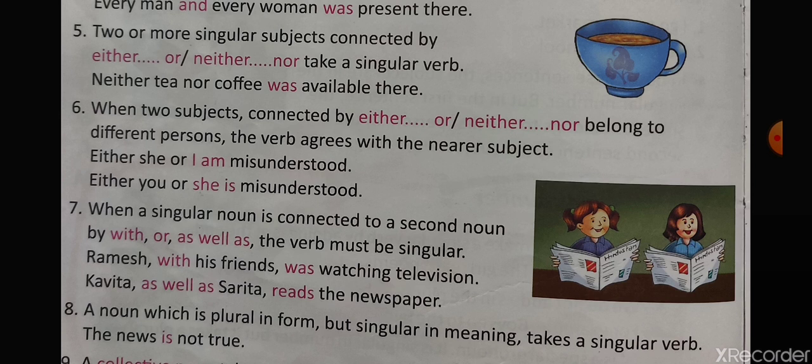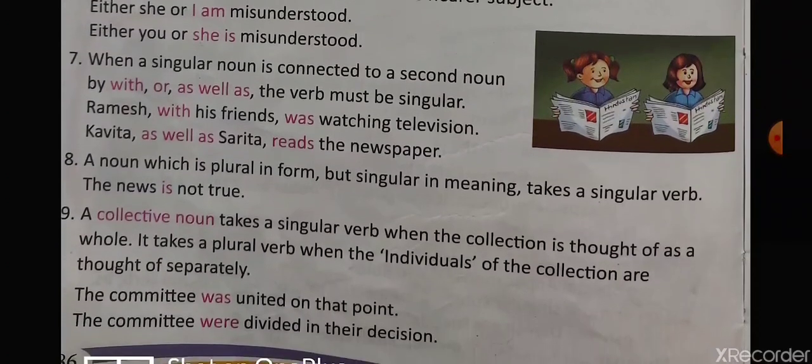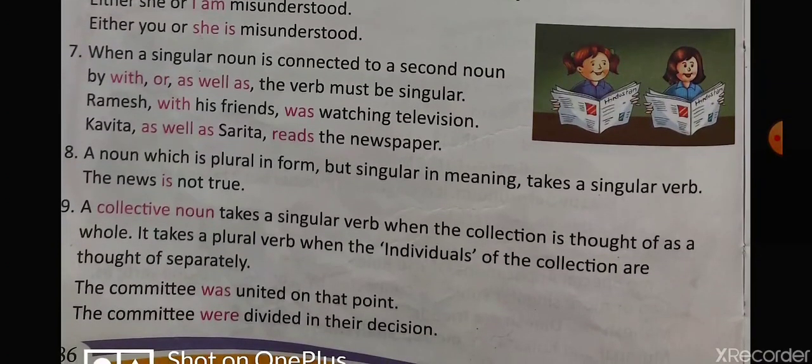When a singular noun is connected to a second noun by 'with', 'or', or 'as well as', the verb must be singular. Whenever we use 'with', 'or', or 'as well as', the verb will always be singular. For example, 'Ramesh with his friends was watching television' — Ramesh is one subject and his friends are another, but since they are connected with 'with', the verb is also singular.